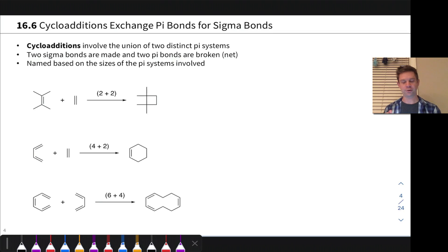In a cycloaddition reaction, two distinct pi systems get together and form bonds on their ends or at their termini to create a new ring.